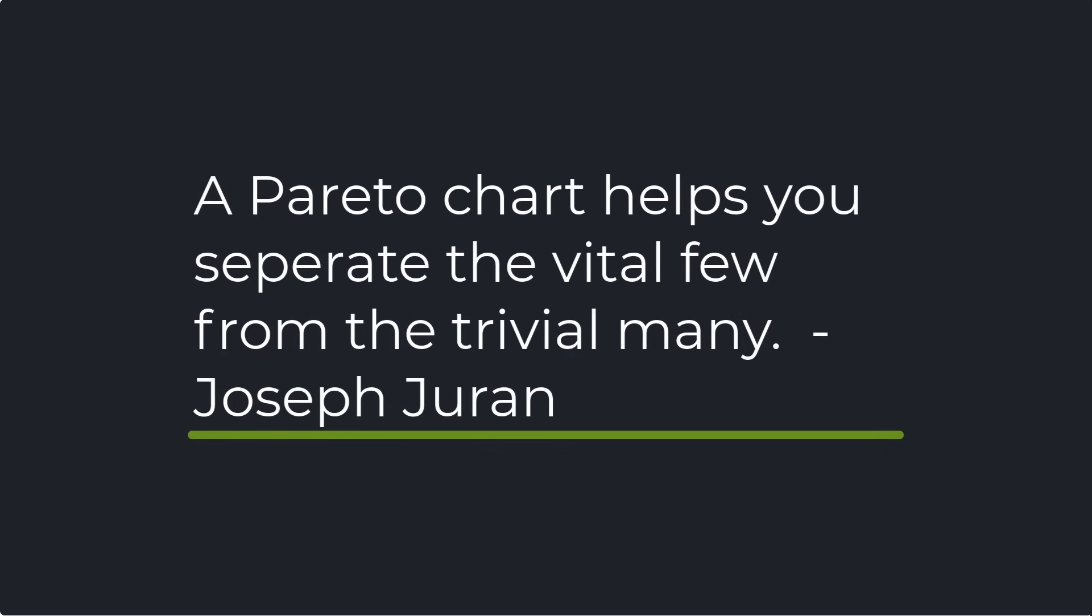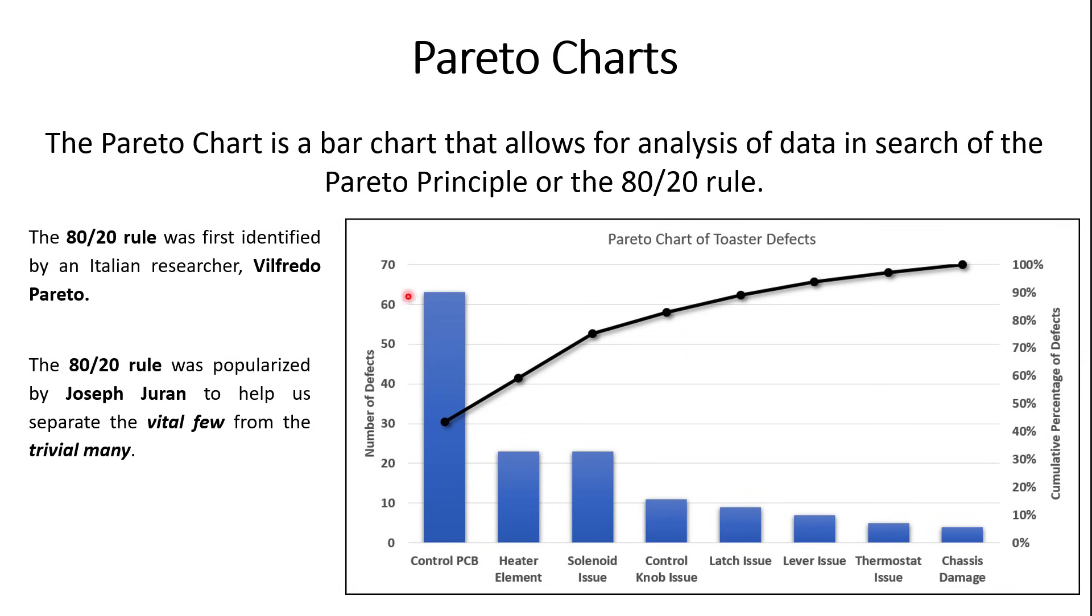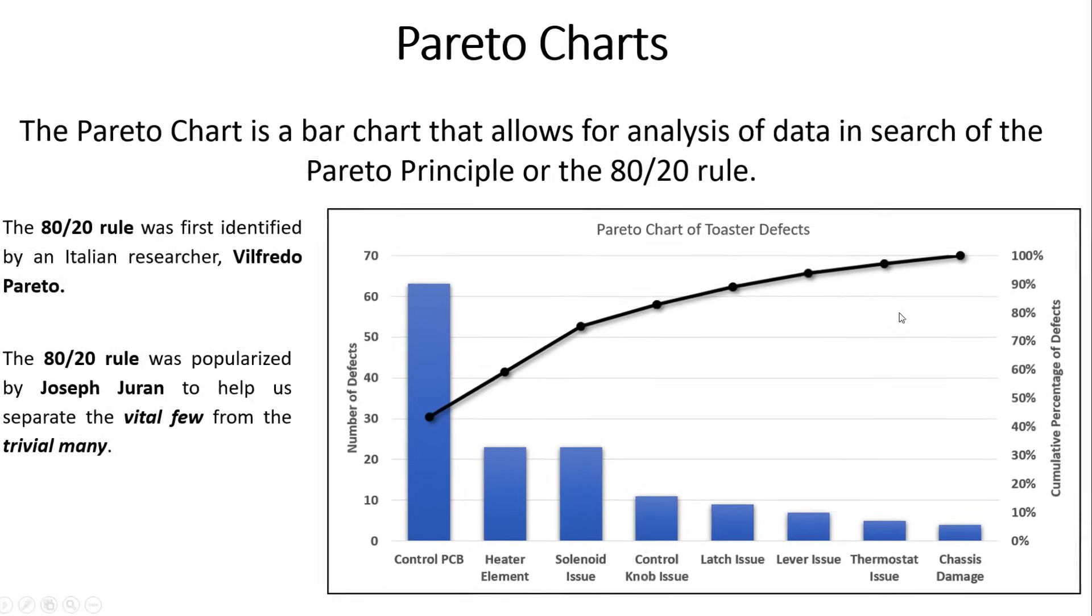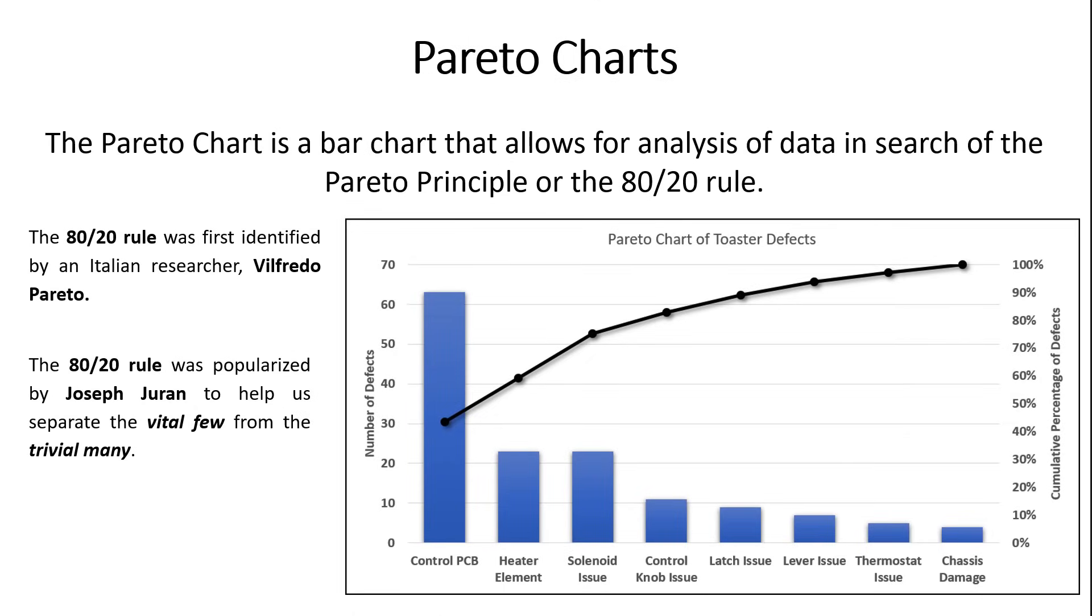A Pareto chart helps you separate the vital few from the trivial many. When you're solving a problem, there's often one or two key issues, key root causes or key defects that you need to focus on to have a major impact. When we take our data from the check sheet and we put it into this Pareto chart, we see that control PCB issues accounts for nearly 40% of our defects. Now that we have this Pareto analysis and we know that control PCB is our primary issue, it tells us what to focus on.